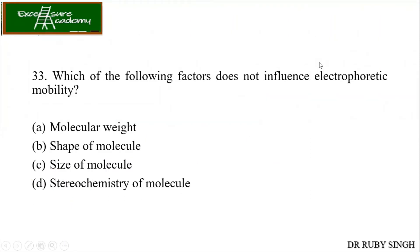Which of the following factors does NOT influence electrophoretic mobility? The answer is stereochemistry of the molecule. It doesn't matter whether it is D form or L form, R form or S form. Stereochemistry does not matter — what matters is only molecular weight and the shape and size of the molecule. So the answer is stereochemistry of the molecule.